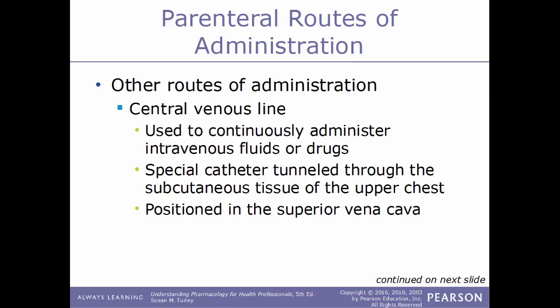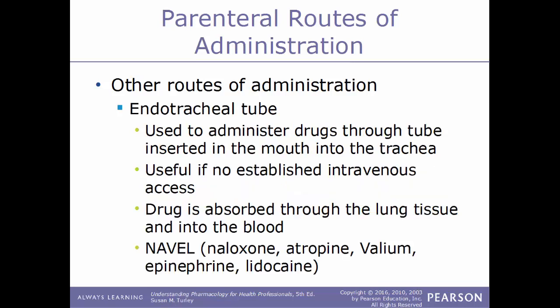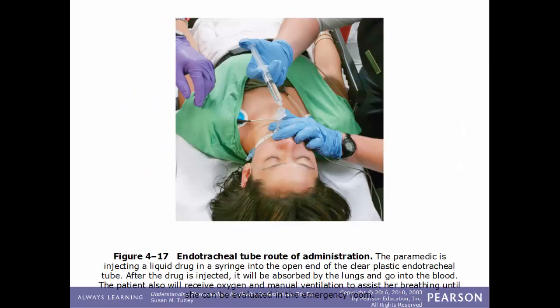A central venous line continuously administers intravenous fluids or drugs via a catheter tunneled through the subcutaneous tissue of the upper chest, connecting to the superior vena cava leading to the heart. The endotracheal tube administers drugs through a tube inserted into the mouth and down into the trachea, with drugs absorbed through lung tissue and alveoli into the blood. Drugs recommended for this route are remembered by the acronym NAVEL: Naloxone, Atropine, Valium, Epinephrine, and Lidocaine. This route is used for emergency or life-threatening situations.